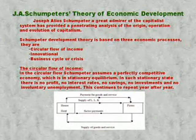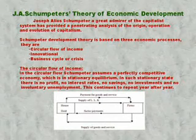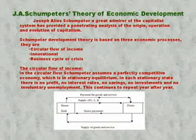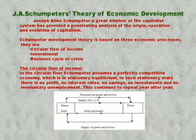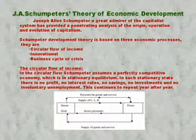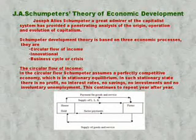Now we will see the first process, namely the circular flow of income, in which Schumpeter assumes that there exists a perfectly competitive economy in a stationary state. A stationary state is one in which there is no profit, no interest, no investment, no savings, and no involuntary unemployment. In this situation, the circular flow of income keeps on circulating within the economy.